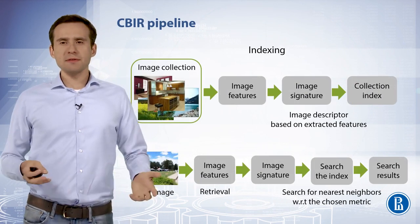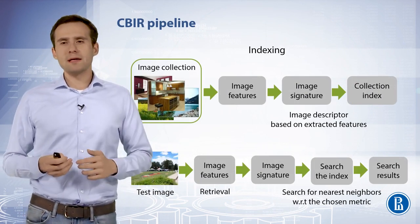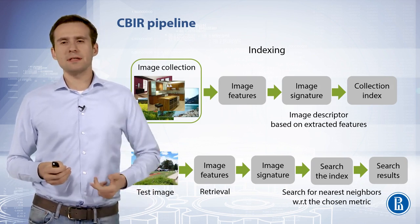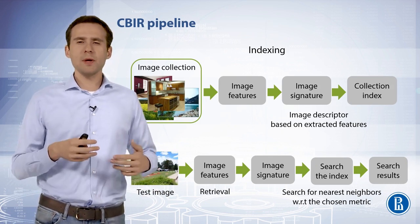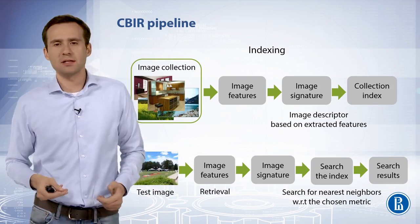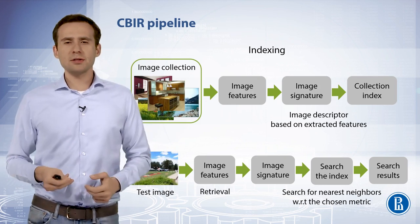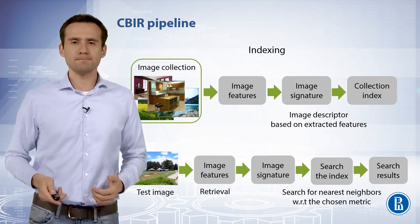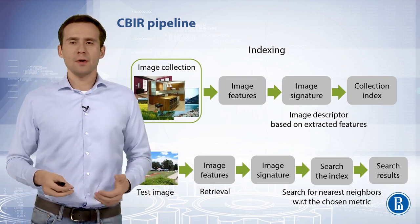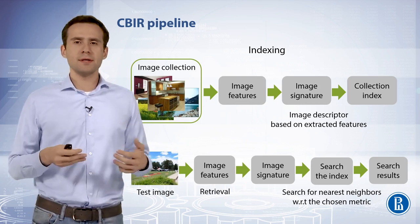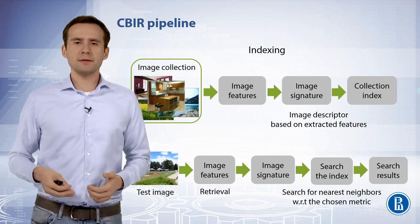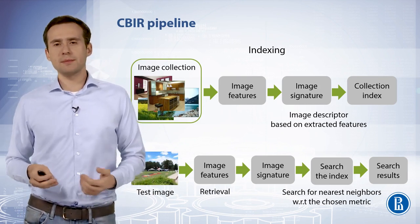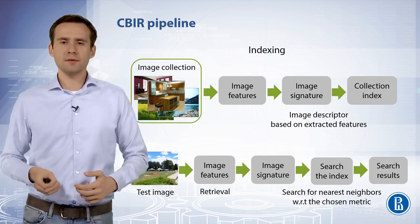Content-based image retrieval systems are all organized in a roughly similar way. First, image features are extracted from raw pixels and converted into an image descriptor or representation, the role of which is to serve as a digital signature of that image. All of the image signatures are then written into an efficient data structure called the collection index. For a test image, we extract the signature and search for nearest neighbors with respect to the specified distance. In the next video, we will learn how to compute an efficient descriptor using computer vision approaches and deep convolutional neural networks.